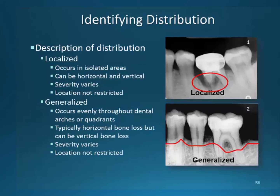Periodontal disease is classified by distribution, also referred to as location. Areas that are isolated are referred to as localized. Both horizontal and vertical bone loss can originate in these isolated areas. Generalization occurs when the periodontal condition is evident throughout the arch or quadrant, with a presence of 30% or more across the dentition. Both horizontal and vertical bone loss can be present in generalized disease. Image one identifies only one tooth having bone loss, while image two shows bone loss throughout the entire quadrant.